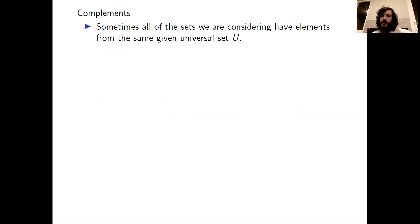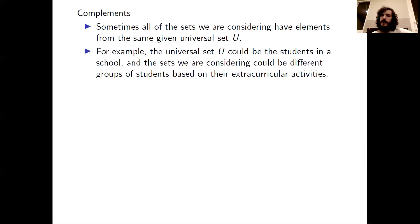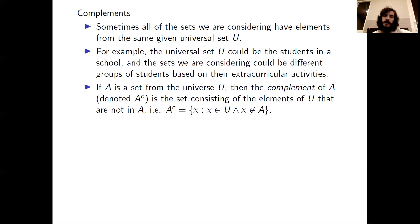There's another kind of complement that we can consider, assuming that all of the sets we are considering have elements from the same given universal set U. In what kind of situation would this happen? Well, for example, the universal set U could be the set of students in a school, and the sets we are considering could be different groups of students based on their extracurricular activities. If A is a set from the universe U, then we define the complement of A, which we can denote as A with what looks like a little exponent C.